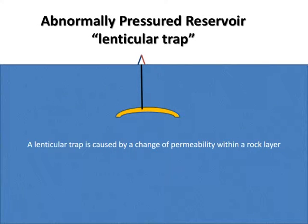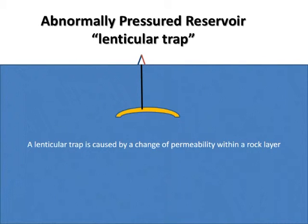This is another example of an abnormally pressured reservoir. However, unlike the Artesian effect where the sandstone outcropped at an elevation greater than the rig elevation, there is no outcrop. Thus, the pressure exerted in the reservoir is not only the result of the pressure of the fluid, but also the result of the overburden rock as it squeezes and puts pressure on the fluid inside the reservoir.